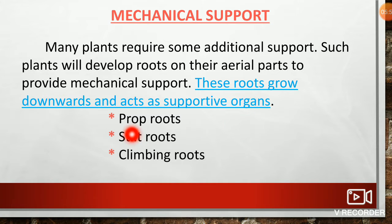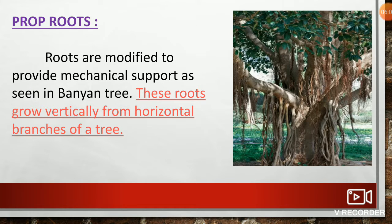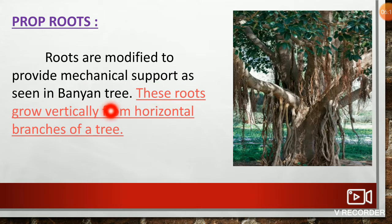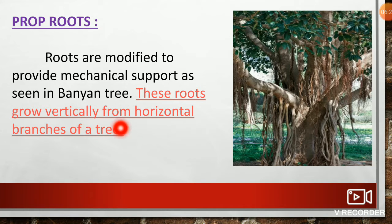The three types are: prop roots, stilt roots, and climbing roots. Prop roots are modified to provide mechanical support as seen in the banyan tree. These roots grow vertically from horizontal branches of a tree.